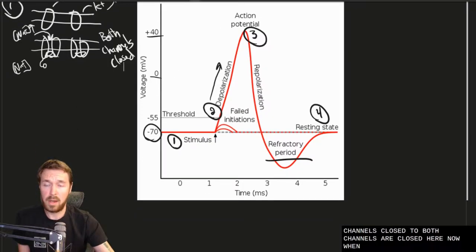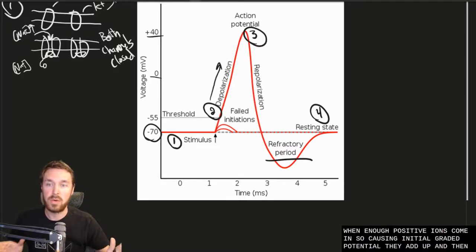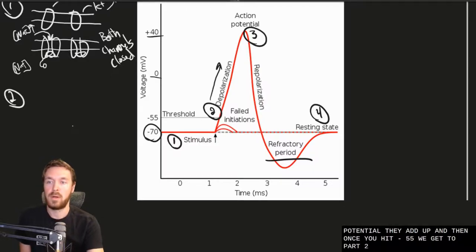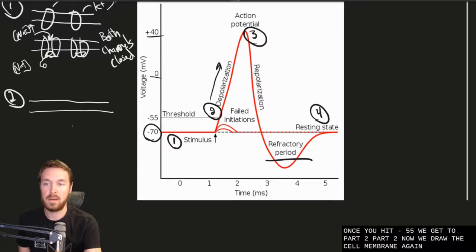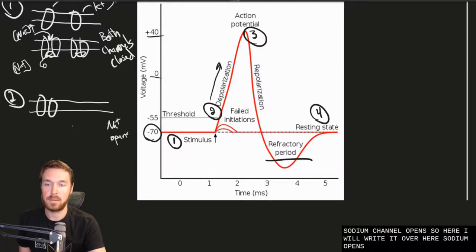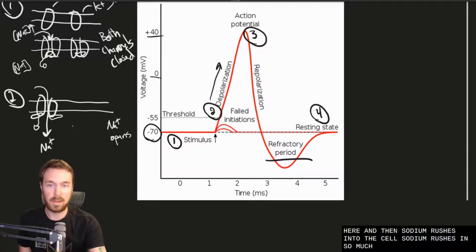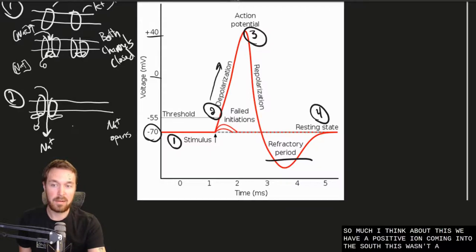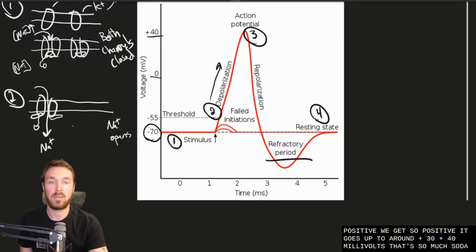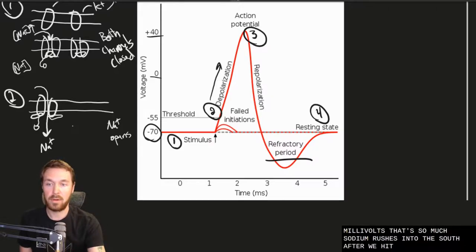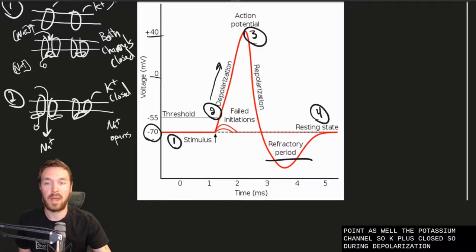When enough positive ions come in — causing that initial graded potential — they add up, and once you hit minus 55 millivolts, we reach part two. Now the sodium channel opens. The little gates move to the side, the ball and chain is still down, and sodium rushes into the cell. Since sodium is a positive ion entering a negative cell, the charge gets closer to zero and then goes up to around plus 30 to plus 40 millivolts as so much sodium rushes in. During this depolarization, the potassium channel remains closed.